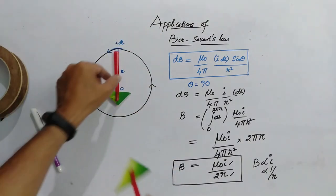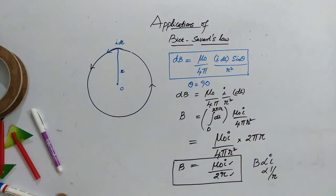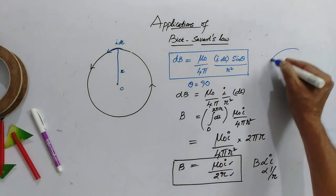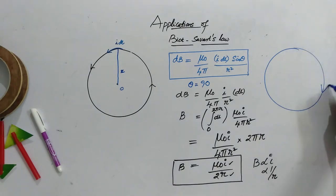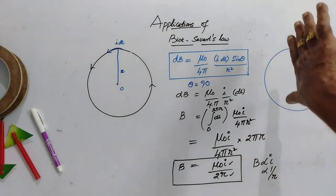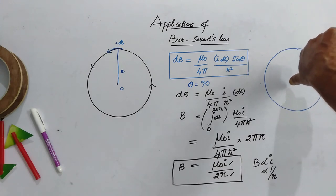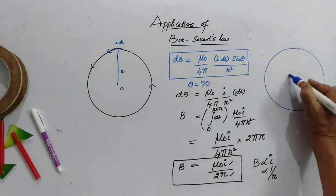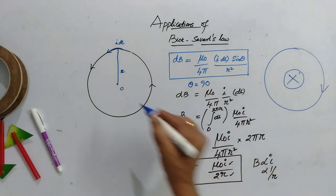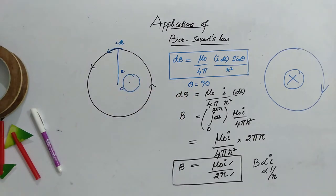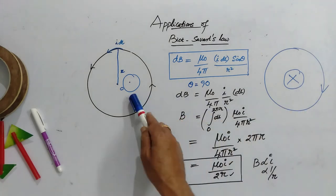Now, suppose if the current is in the opposite direction. If it is in this direction, then I have to keep my fingers in such a way that they should be folded in the direction of current and the magnetic field is into the board. And here, it is out of the board. These are the notations we follow for magnetic field into the board and out of the board.